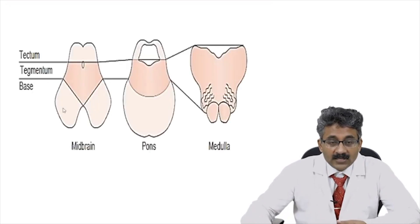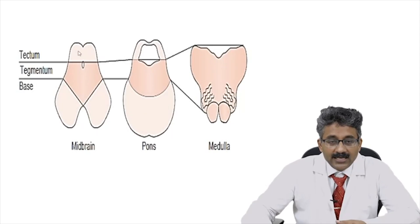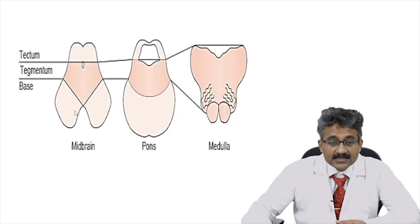Here, students: this is the midbrain, this is the pons, and this is the medulla. This is the posterior part and this is the anterior part. Posteriorly, this is the tectum. The middle part is the tegmentum, and this is the basis — the base. In the pons, the basis pontis is this base. So: tectum, tegmentum, and base.